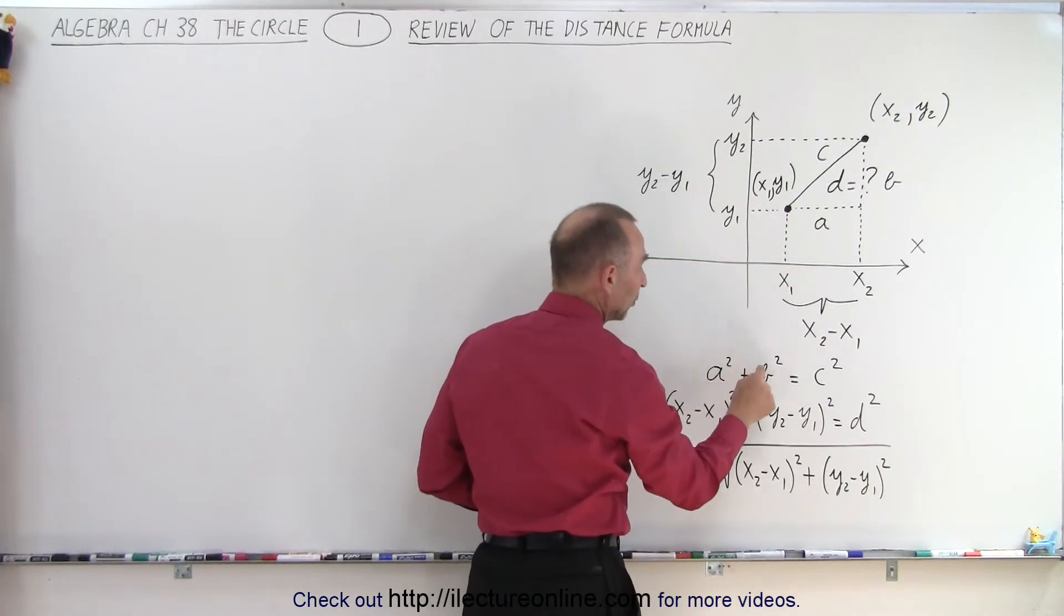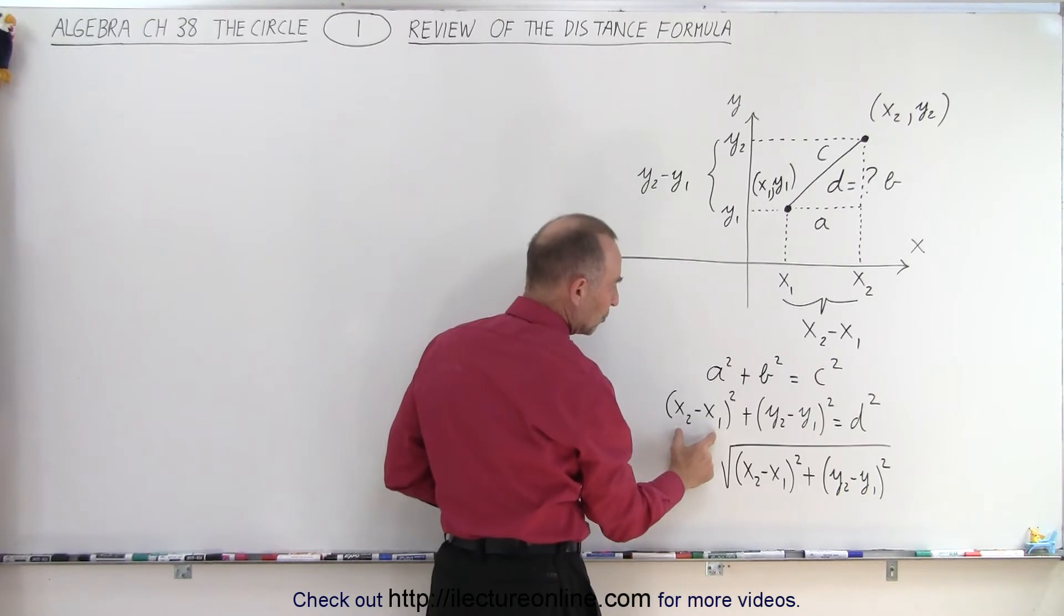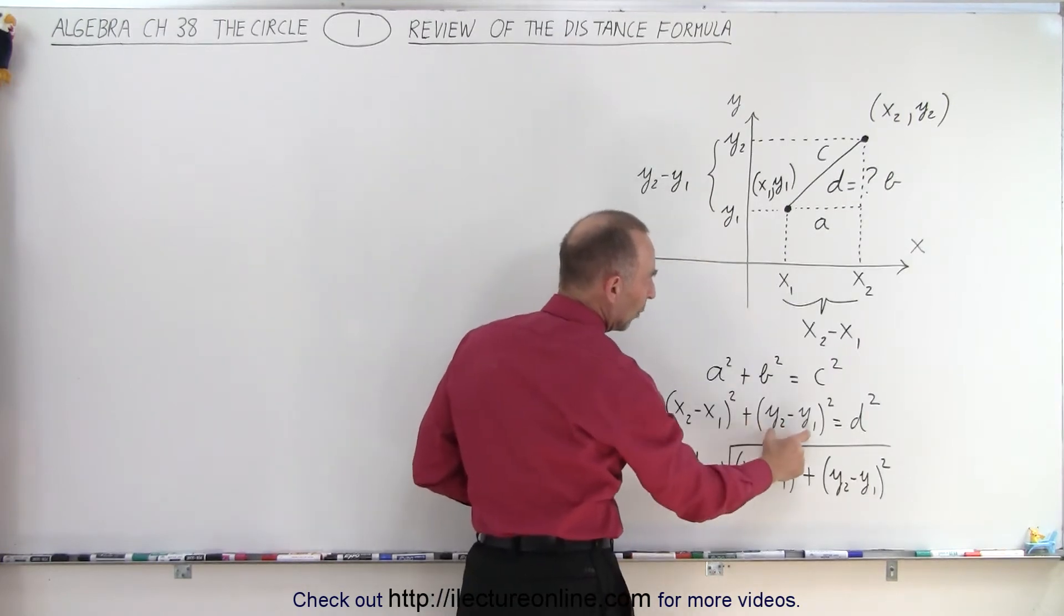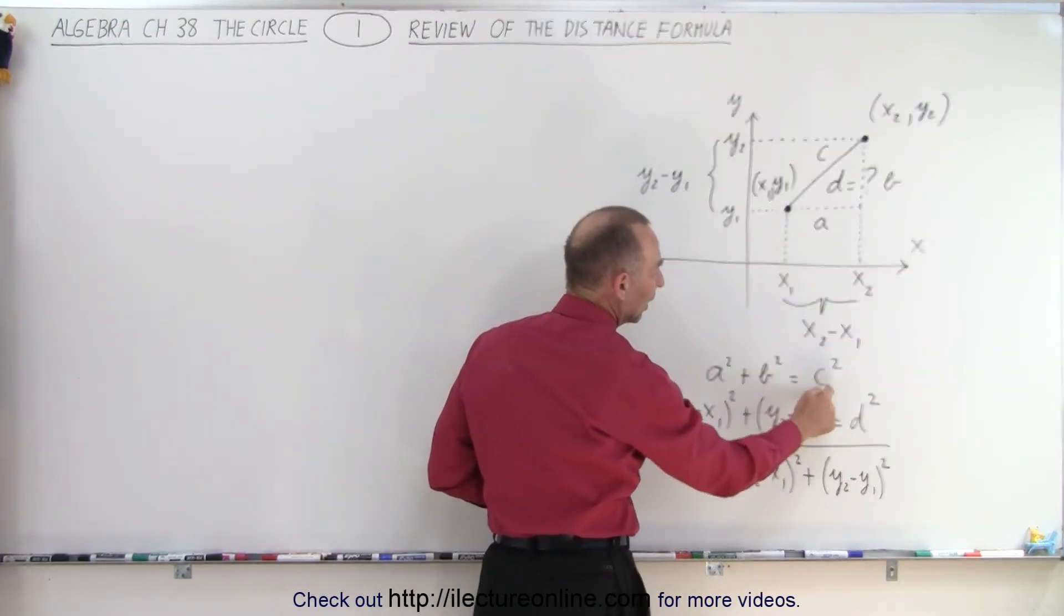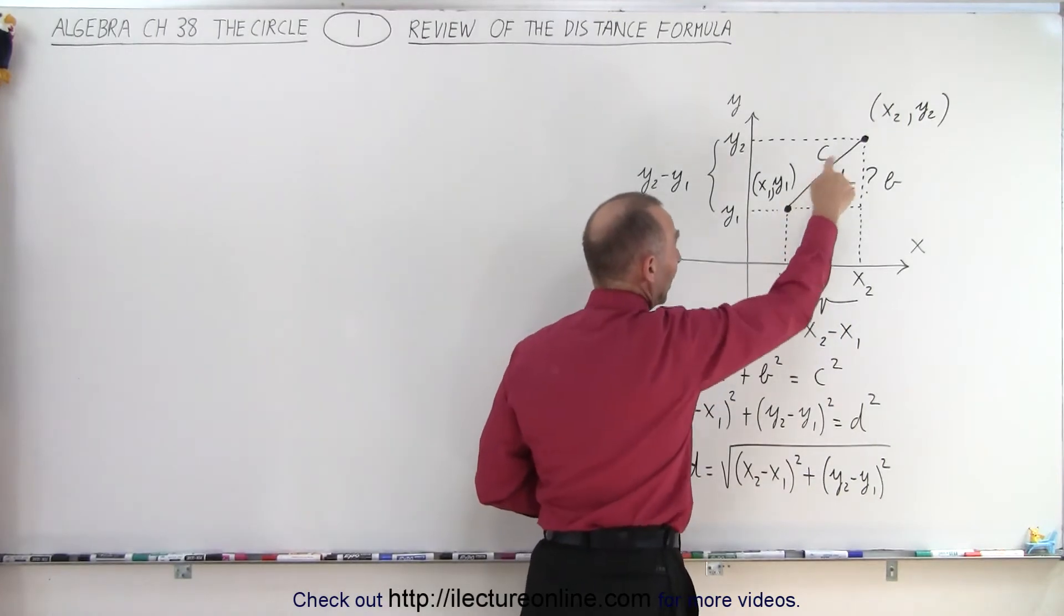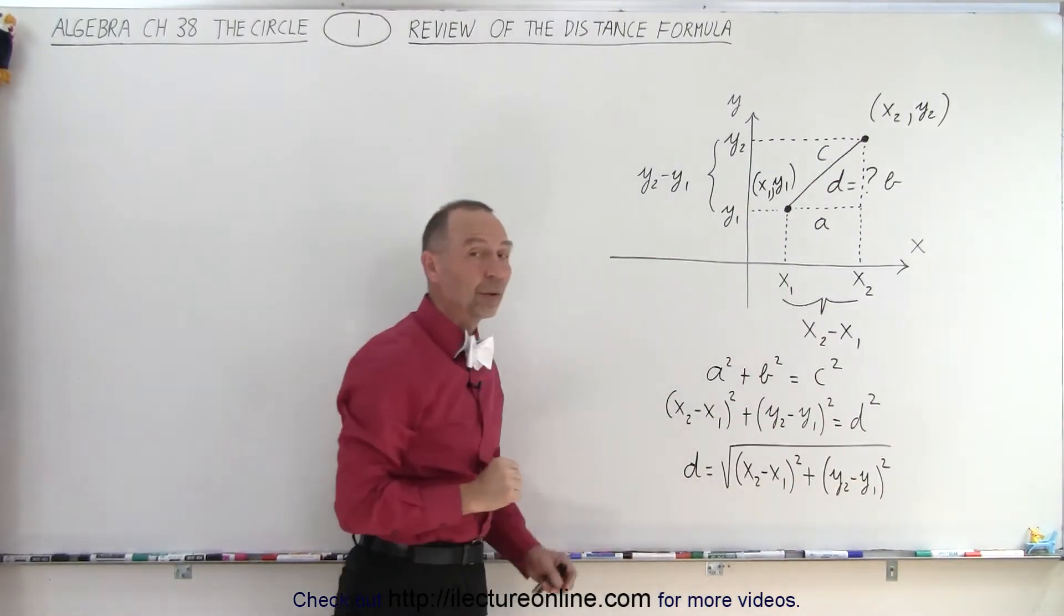And so instead of writing A squared plus B squared, we can write X2 minus X1 squared plus Y2 minus Y1 squared. And of course, in this case, C, the hypotenuse, is equal to D squared.